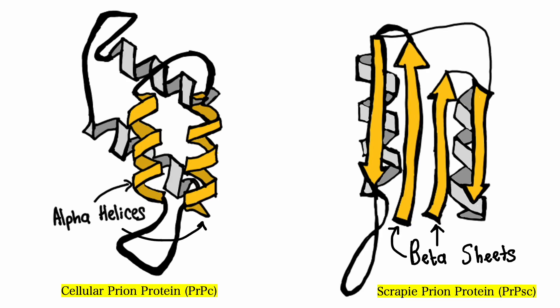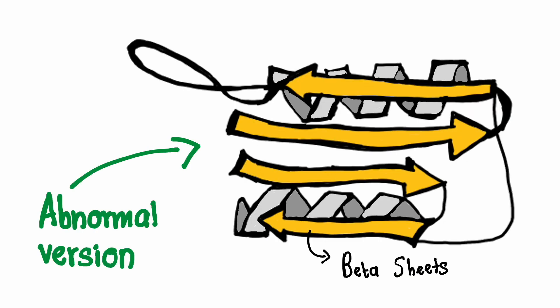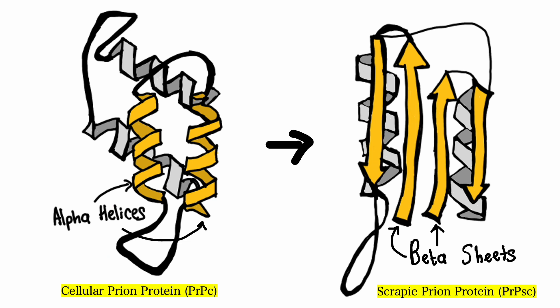Specifically, they contain the prion protein. Prion proteins exist in two forms: a normal harmless form called cellular prion protein, and an abnormal disease-causing form called the scrapie prion protein. The conversion of the normal protein to the abnormal form causes the key event in prion disease pathogenesis.